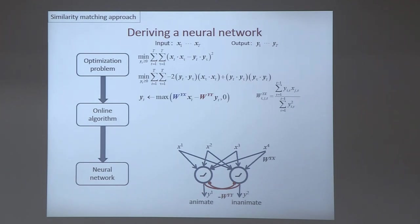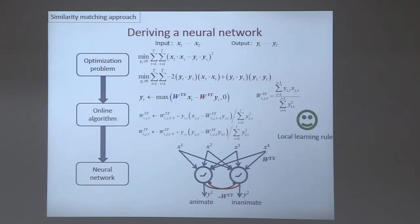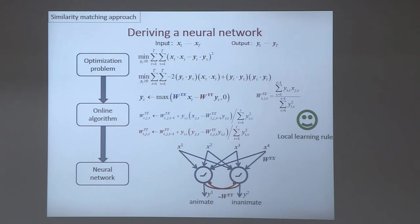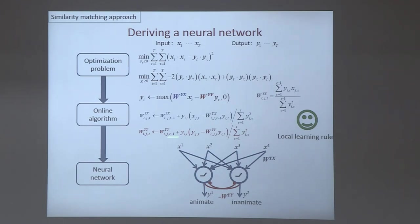If you identify those W's with synaptic weights, you can see that the learning rules are now local. In the online algorithm recursions, in addition to the Hebbian term, the second term — which gave troubles before because it involved a sum over all neurons — no longer has such a sum. Each synaptic weight gets updated only as a function of the activity of the two neurons it connects. Furthermore, we now also have a learning rule for the lateral connections — previously derived non-biologically from the Gramian — but because of the minus sign, this is an anti-Hebbian rule: the synaptic weight is minus the correlation of activity.